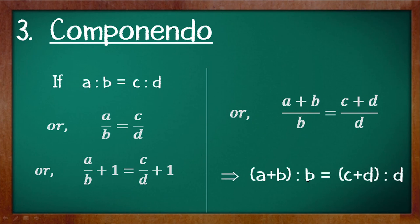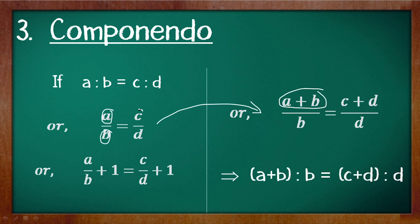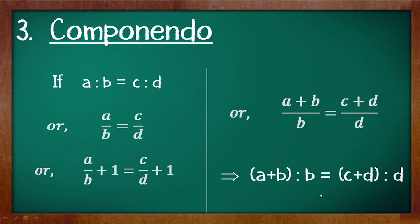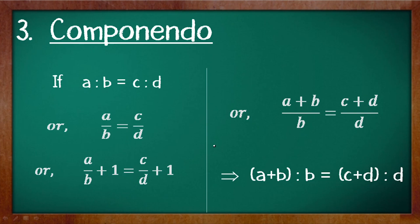Writing this into ratio form we have a plus b is to b is equals to c plus d is to d. So here what we do is we add the numerator and the denominator and write that sum into the numerator, keeping the denominator the same — numerator plus denominator by b equals numerator plus denominator by d. The antecedent and the consequent are added and written in the antecedent part. This property is known as componendo.